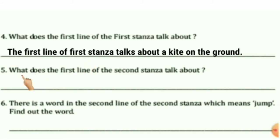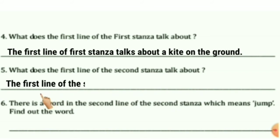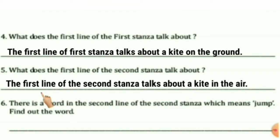Question 5: What does the first line of the second stanza talk about? The first line of the second stanza talks about the kite in the air. It will dance and capper.